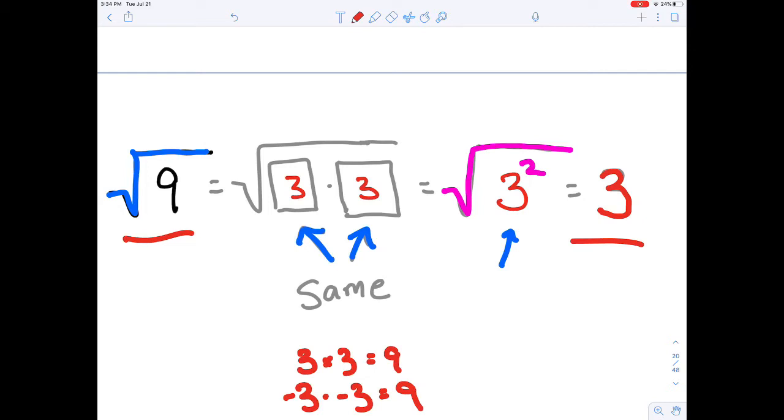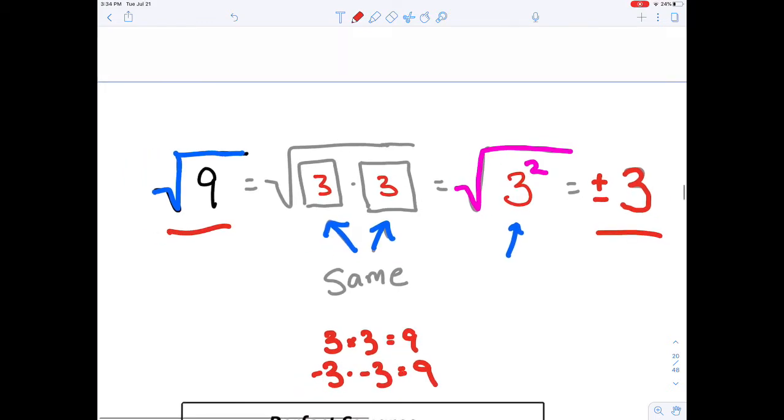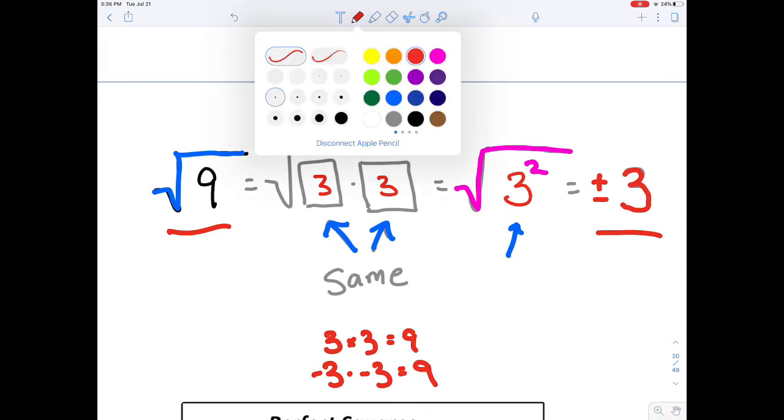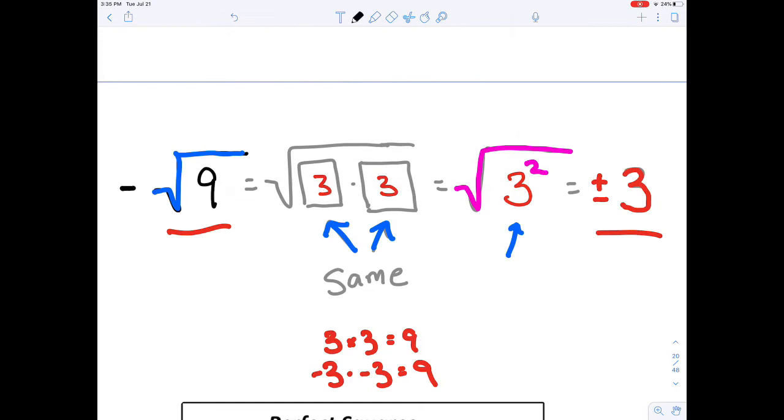So technically speaking, there are two answers for the square root of 9. There is positive 3 and negative 3, and oftentimes we'll write that as positive or negative 3. But in most cases, if a problem is expecting to see a negative sign, what you'll see inside the problem is a negative in front of the radical symbol.